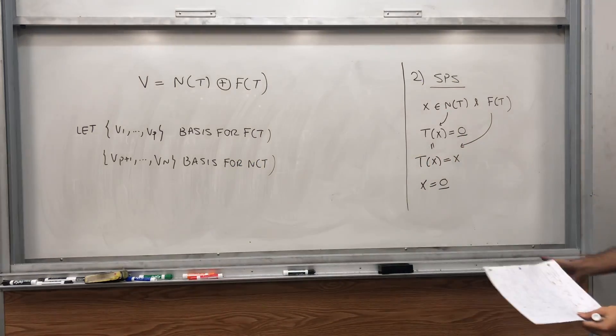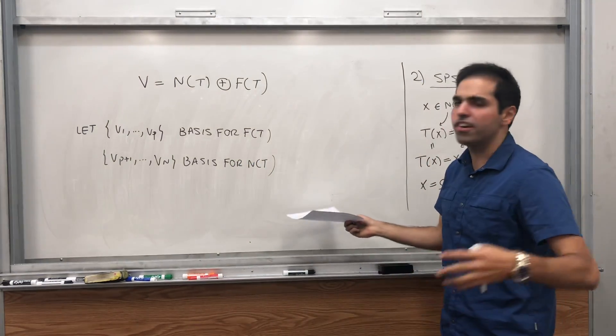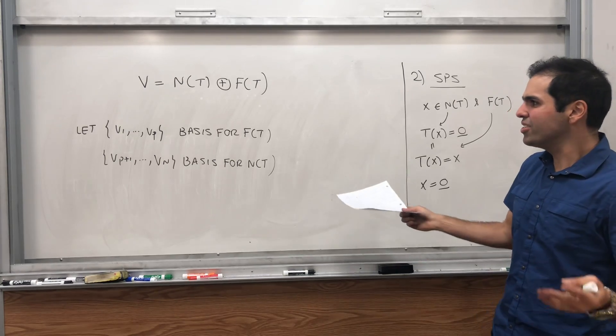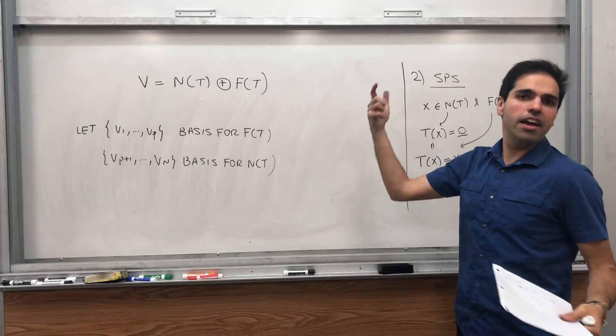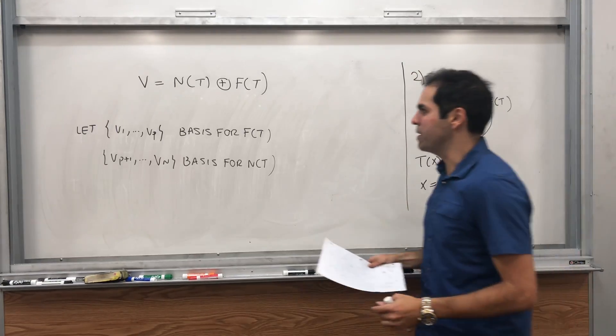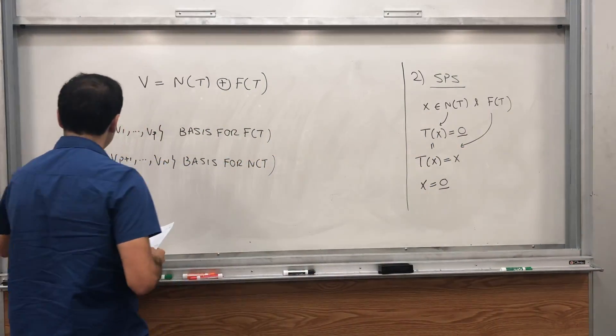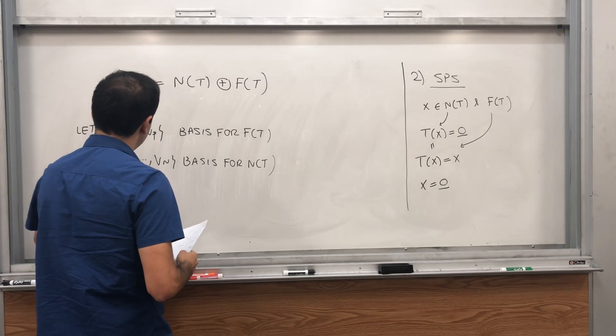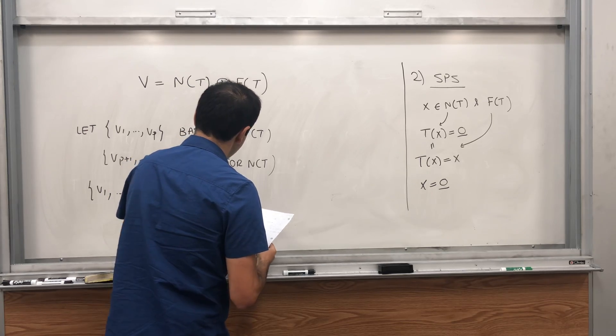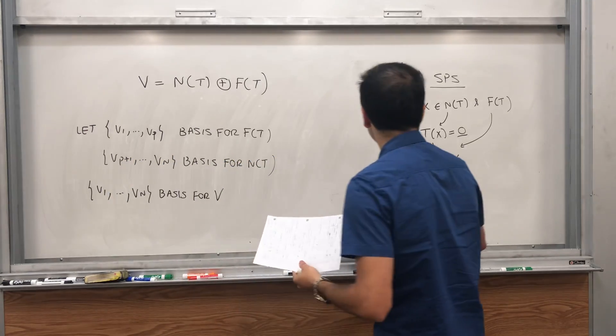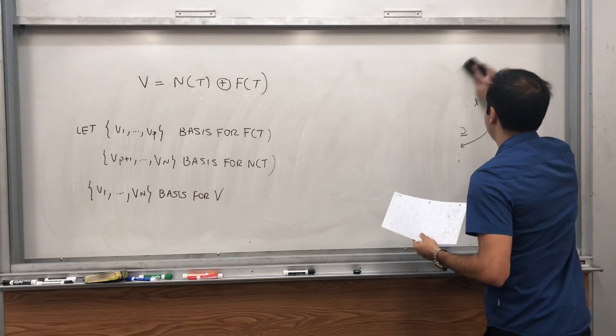So let, let's say, v1 up to vp be a basis for F(T). There's no reason I write it that way. And vp+1 up to vn be a basis for N(T), the null space. Then what does T do? So remember, to figure out the matrix of a linear transformation, you just calculate T as each basis vector and you just write it in terms of your basis vectors. So it turns out v1 up to vn, it's a basis for V.